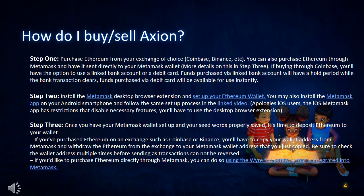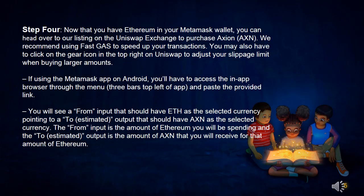If you'd like to purchase Ethereum directly through Metamask, you can do so using their Wyre gateway that is integrated into Metamask. Step 4: Now that you have Ethereum in your Metamask wallet, you can head over to our listing on the Uniswap exchange to purchase Axion. We recommend using Fast Gas to speed up your transactions. You may also have to click on the gear icon in the top right on Uniswap to adjust your slippage limit when buying larger amounts.